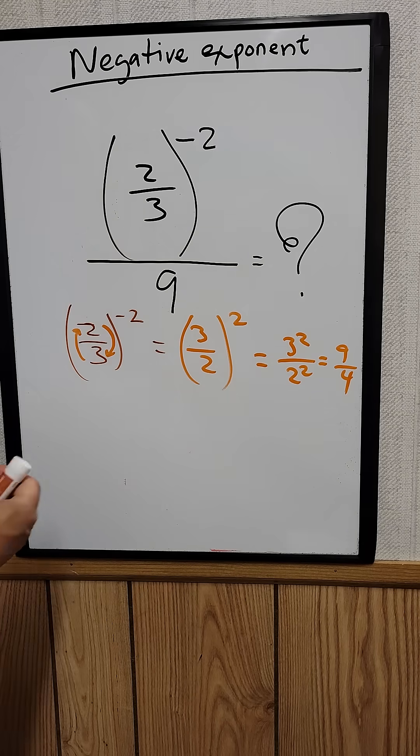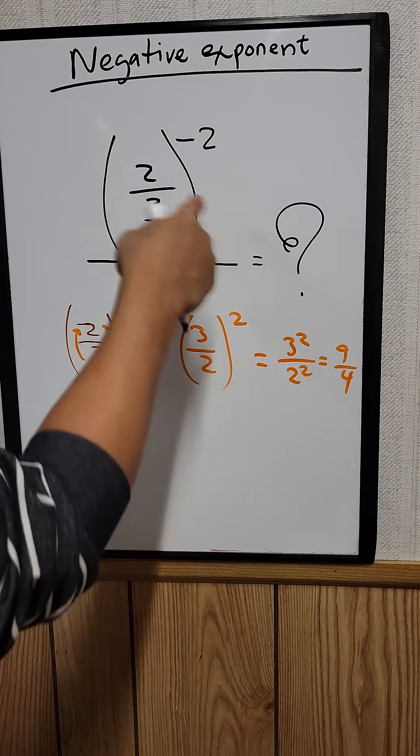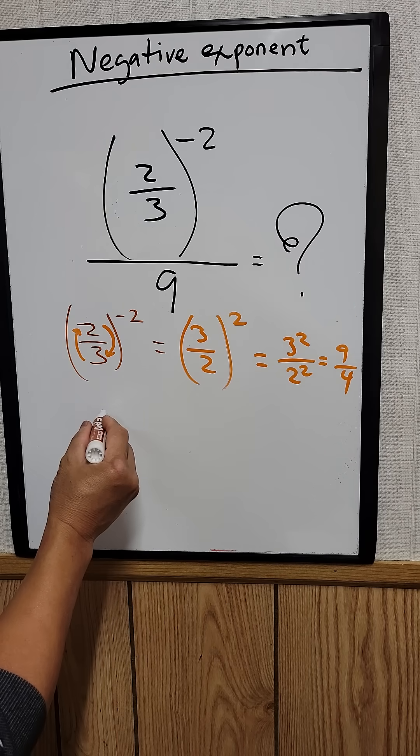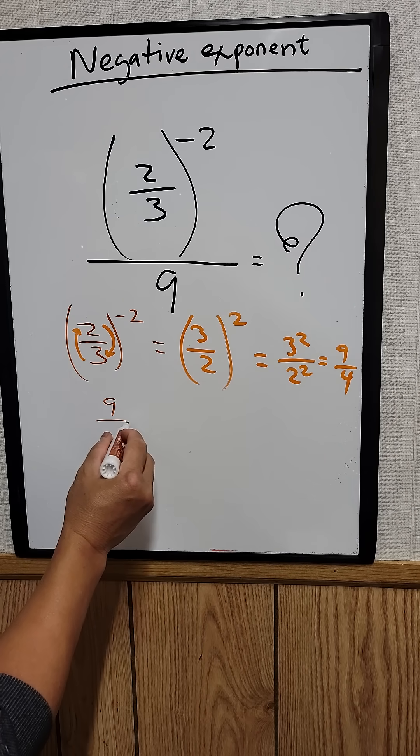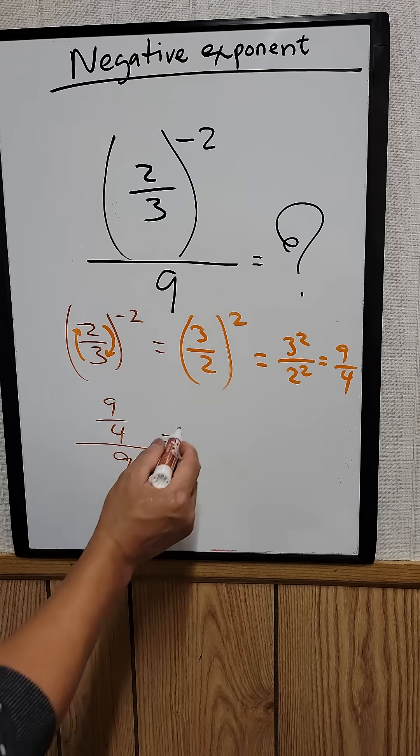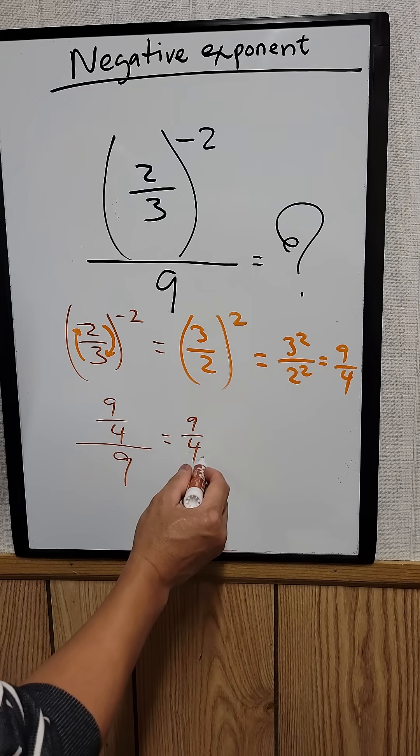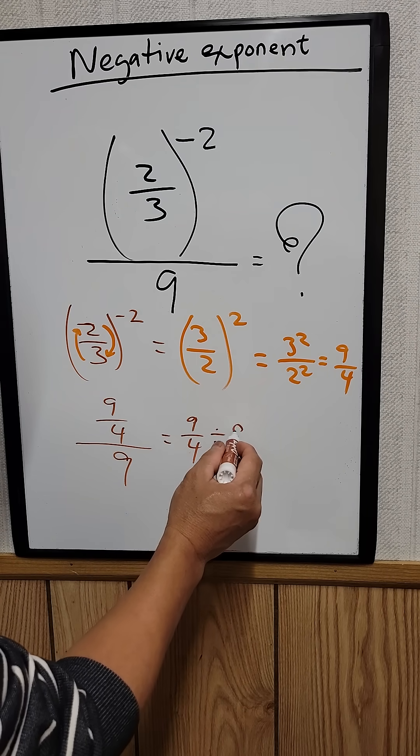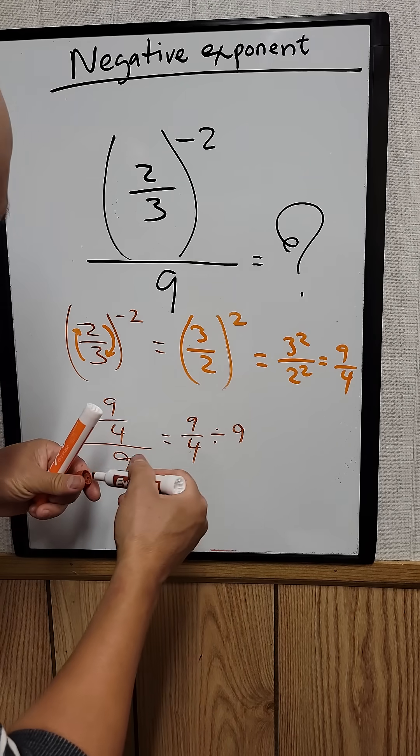Okay, and now we can substitute that into the numerator. So 9 over 4 divided by 9. You can rewrite this as 9 over 4 divided by 9, or you can just put 1 on the bottom right here.